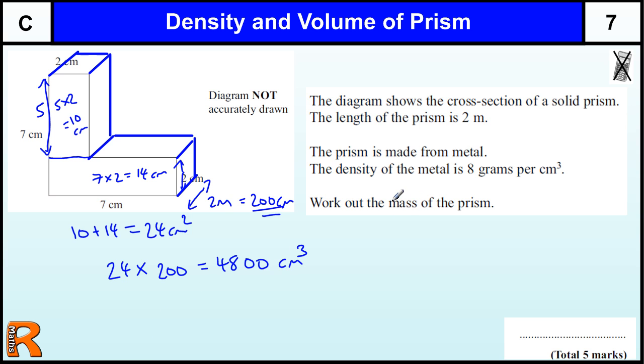Okay, so next thing we've got to do is work out the mass of the prism, so each one of those centimetre cubes is worth 8 grams, so we've got 4,800 times by 8. Now, I would suggest maybe the quickest way to do that is just do 48 times 8. You could double it three times, that would be the same as times by 8, but 8 times 8 is 64, and 8 times 4 is 32, plus the 6 is 38. So 38,400, and then you've got two zeros, so 38,400 grams.